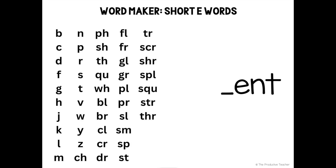Hi, I'm Kate with The Productive Teacher, and today we're going to play the word maker game with the ent word family. One syllable words have an onset — that's the letter or letters that come before the vowel in a word — and a rhyme, that's the vowel and any letters that come after it. All of the words in the ent word family have the same rhyme: ent. We're going to add onsets to the rhyme to try to make new words. As you watch the video, you can listen to me read the words, you can read along with me, or you can mute the video and read the words by yourself. Let's get started.